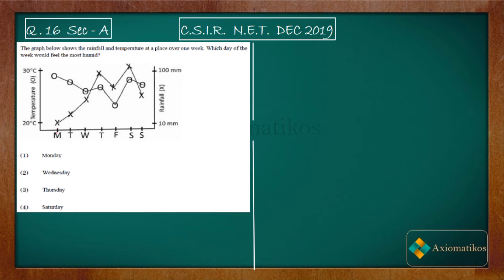On Monday, the cross symbol represents rainfall and the O symbol represents temperature. On Monday, rainfall is very less — around 10 millimeters — but temperature is very high. Because rainfall is less, we will have fewer water vapors, so we will have the least humidity on Monday compared to other days where rainfall is also higher.